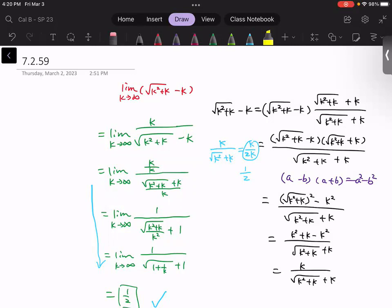The idea is the so-called conjugate technique. We multiply by square root of k squared plus k plus k both on top and the bottom, so we will still keep the equation.